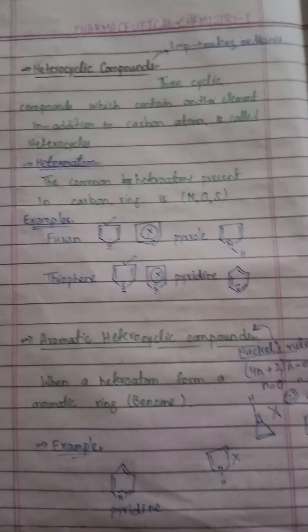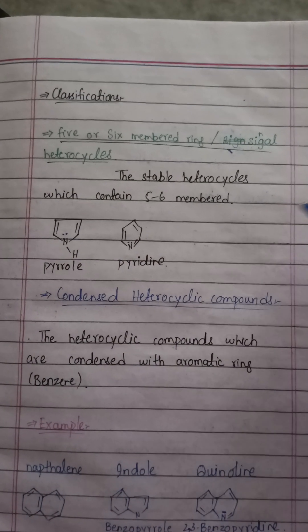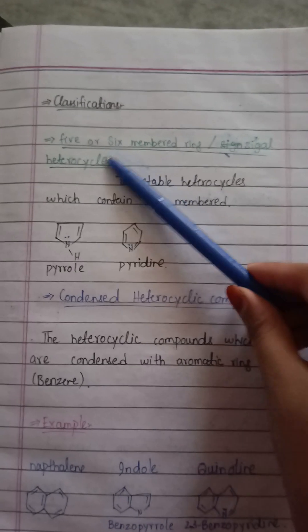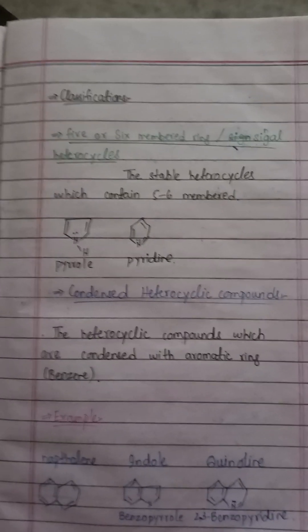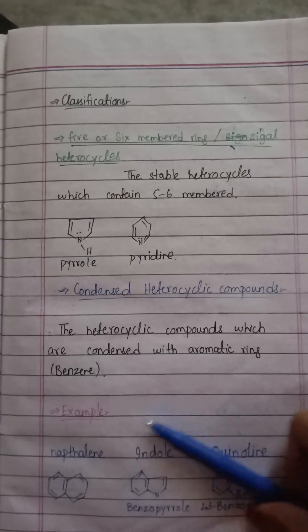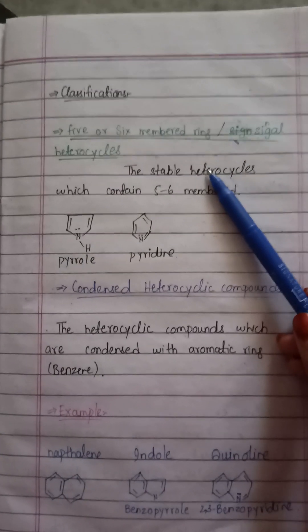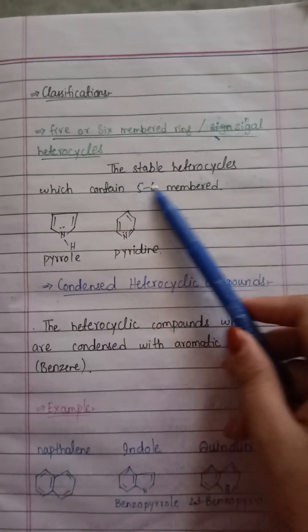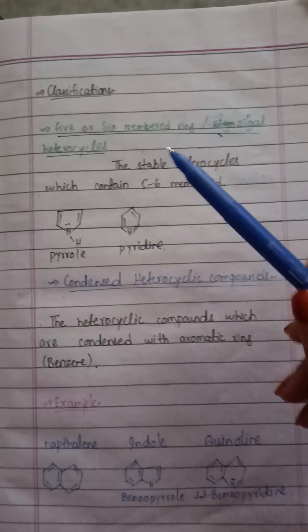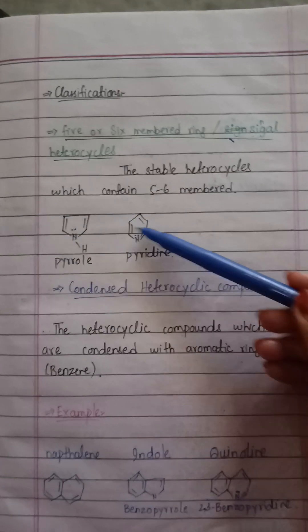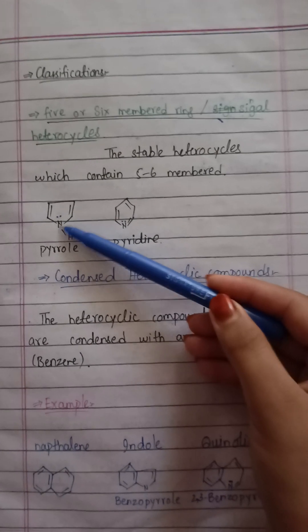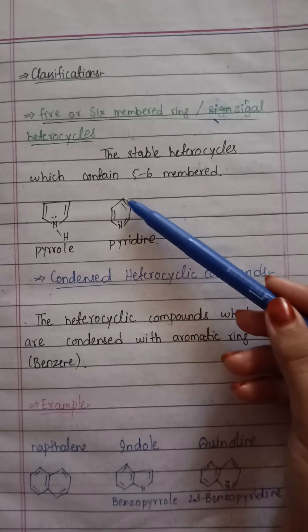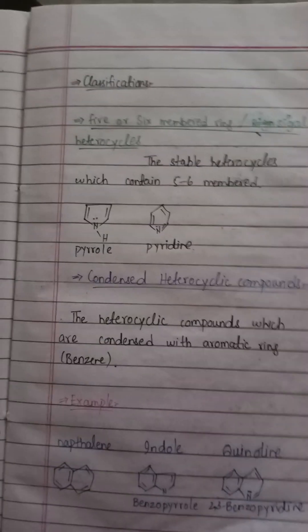Heterocyclic compounds are classified into two types. The first is the 5- or 6-membered ring, also called a single heterocycle. Five- and six-membered rings are more stable. For example, pyrrole is a single ring structure with a 5-membered ring, and pyridine is a 6-membered ring.